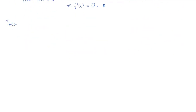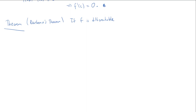Now let's do Darboux's theorem, something you probably didn't see in your Calc 1 course. Darboux's theorem — which we won't prove here — states that if f is differentiable on a closed interval [a, b], then the derivative f′ satisfies the intermediate value property on [a, b].